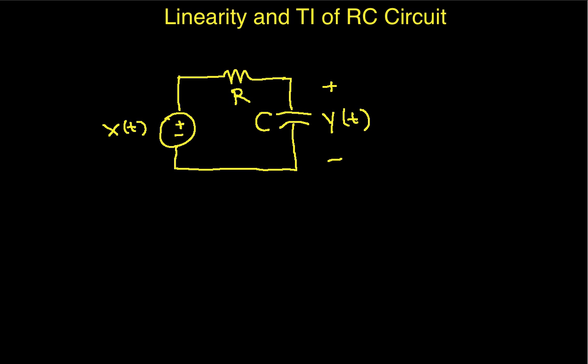The first thing we'll do is mark our capacitor here as having a capacitance of C. Let me back up. The input to this circuit, x(t), is the voltage at this source. So basically the voltage across here, plus or minus.